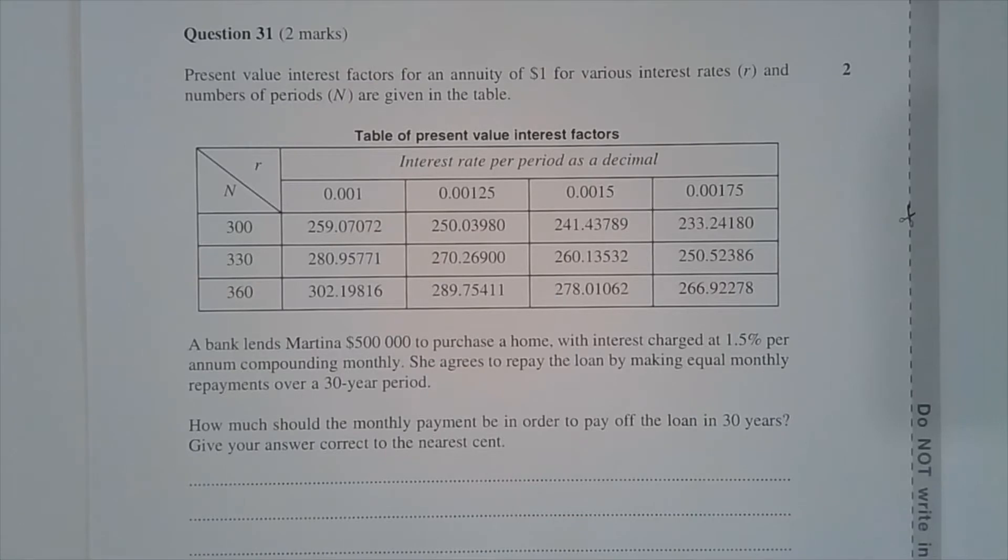Question 31. Present value interest factors for an annuity of $1 for various interest rates and numbers of periods are given in the table.